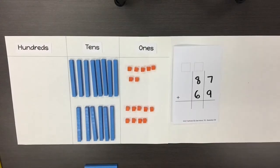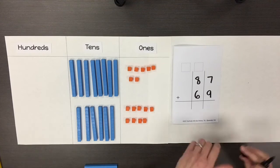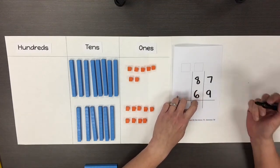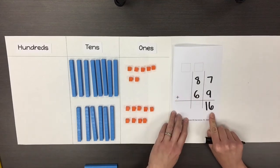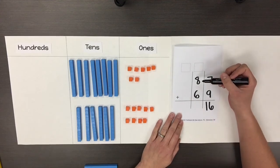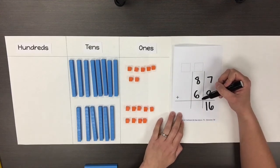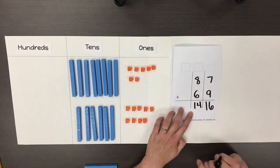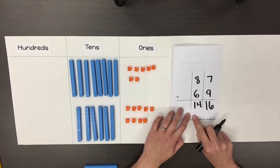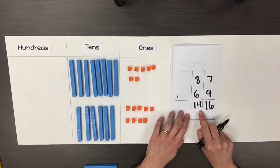The following represents a common misconception related to the standard algorithm. Rather than understanding the place values and how to regroup to the next place value, a student may incorrectly record the entire sum of the digits in each column. When adding 7 ones and 9 ones the student gets 16 but records 16 under the ones place instead of regrouping. When adding 8 tens and 6 tens the student gets 14 tens but records both digits in the tens place. The student incorrectly assumes the sum is 1416.